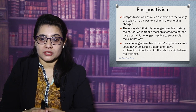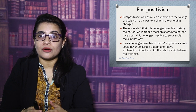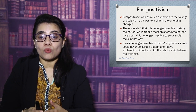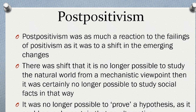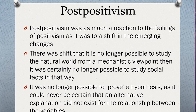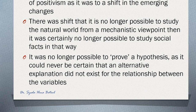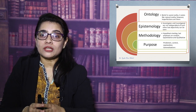The next paradigm is post-positivism. Post-positivism was as much a reaction to the limitations of positivism as it was a response to emerging changes. There was a shift: it was no longer considered possible to study the natural world from a mechanistic viewpoint, and certainly no longer possible to study social facts that way. Believers of this paradigm thought it is not possible to see a single reality as we can see natural reality, and a hypothesis can sometimes be rejected since an alternate explanation could always exist for relationships between variables.